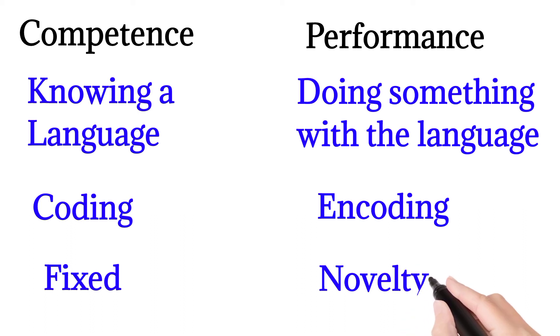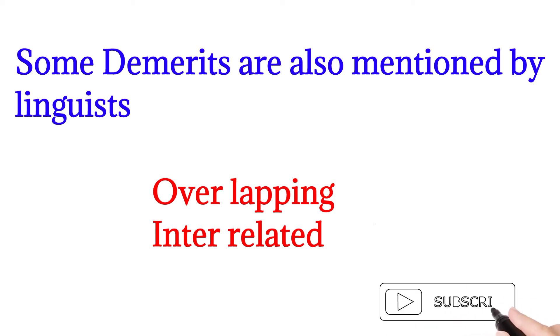So someone's performance is better and someone's is not. Knowledge, competence, everyone has. But how effectively one performs according to the situation, that depends on individual ability and how present-minded they are. Of course, there has been criticism on this, that these two are very overlapping, very interrelated. One cannot separate the two, cannot use them in isolation. Without competence, performance is useless. If there is no knowledge, and if there is competence but no performance, then what is the use of that. So therefore, such distinction between these two was not necessary, some linguists say.